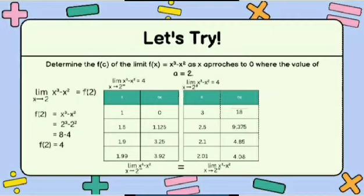Moving on to the right side, our X values are 2.5, 2.1, and 2.01. Again, substituting the values of X into the equation, we will have 18, 4.375, 4.85, and 4.08. Therefore, the limit of X cubed minus X squared as X approaches 2 from the right is equal to positive 4.